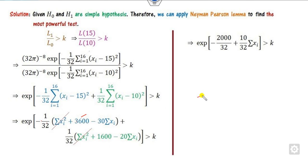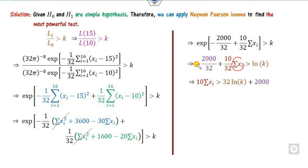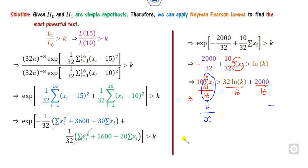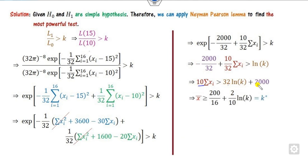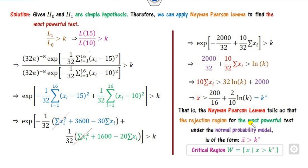After expansion, the remaining terms include: −(−100/32) and +(−225/32 + 1600/32) or similar constant terms. Taking the natural log of both sides (since it is an exponential), the expression becomes a linear function of the summation of xi. Dividing both sides by 16 converts the sum to the sample mean x̄. The expression dependent on K is called k*, so the critical region is W = {x̄ : x̄ ≥ k*}, which is the most powerful critical region.